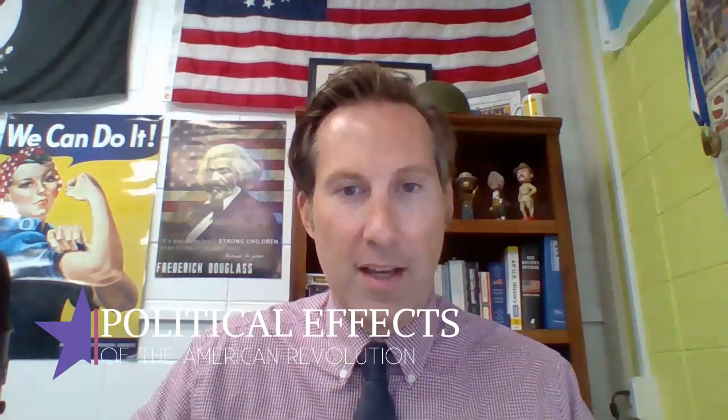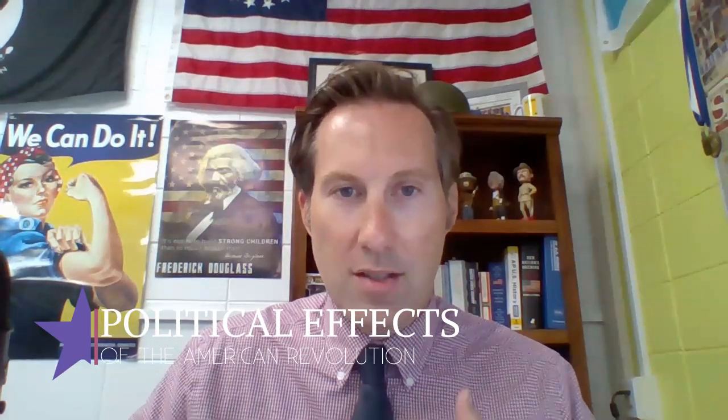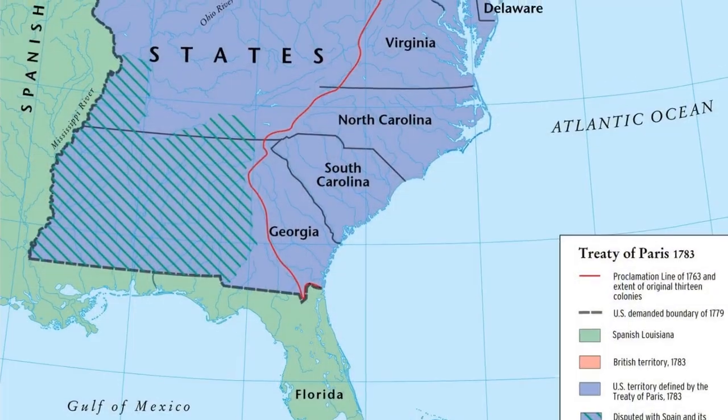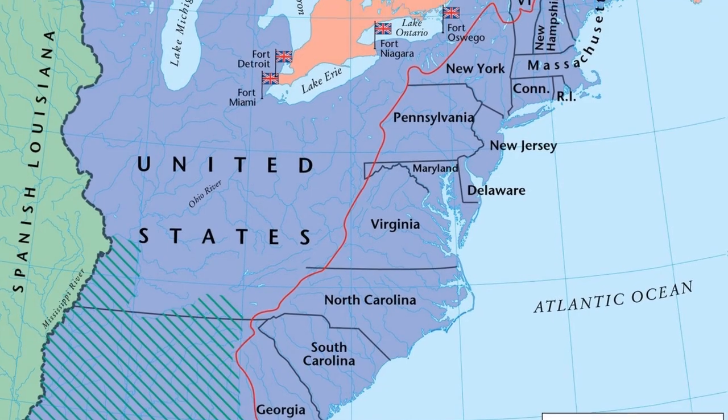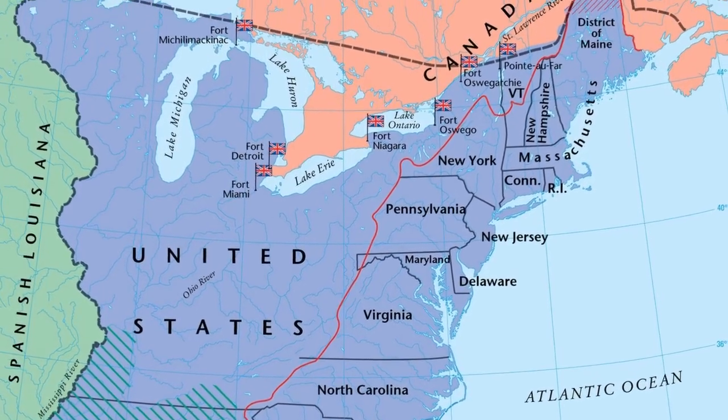Any discussion of the effects of the American Revolution should begin with politics, since some of the most obvious changes to the colonies were political. First, the American Revolution legally created the United States as we know it. The Treaty of Paris, signed in 1783, established a new sovereign state — the United States of America — which stretched from the Atlantic coast to the Mississippi River. This was a significant change for former colonists, who were now free to establish their own form of government.